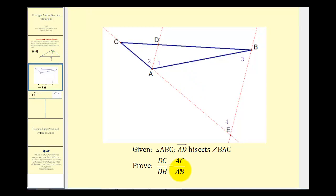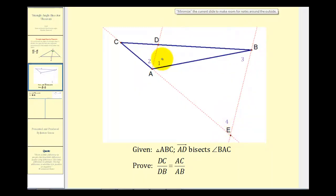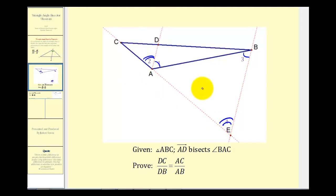The first thing we know from the Triangle Proportionality Theorem: if line AD is parallel to line EB, which is a side of the large triangle, then the ratio of CD to DB equals the ratio of CA to AE. Also, since AD is parallel to BE, angle one is congruent to angle three by alternate interior angles, and angle two is congruent to angle four by corresponding angles. Using this information, we can perform substitutions and prove the theorem.